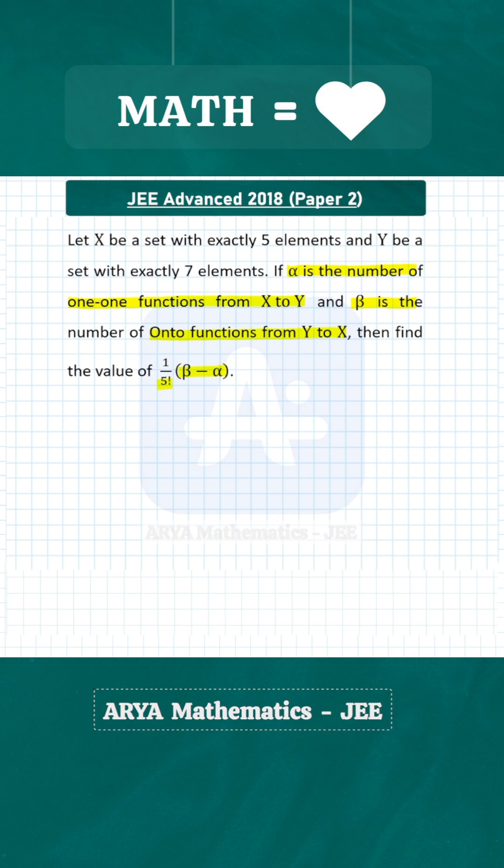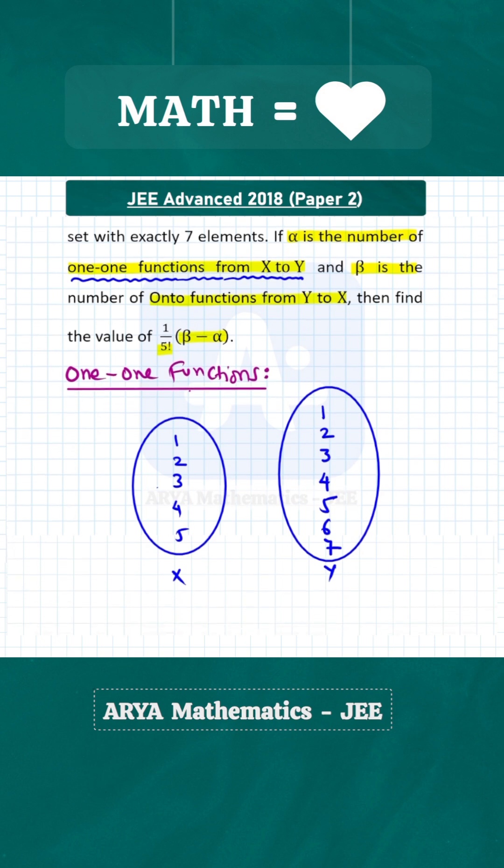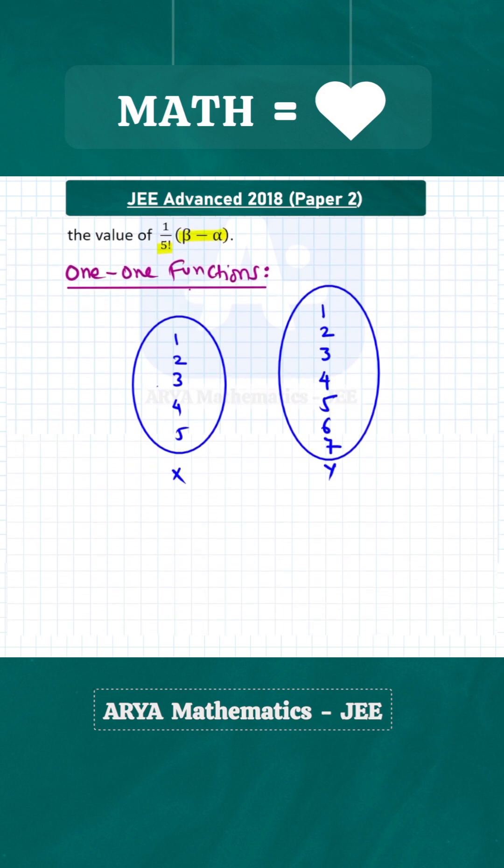So first let us find the number of one-to-one functions from X to Y. For one-to-one functions, we have to select any 5 out of 7 elements from set Y and then connect those 5 elements with the 5 elements of set X.